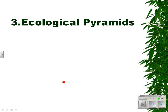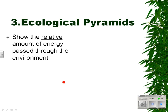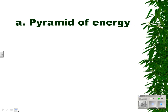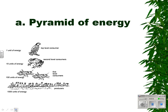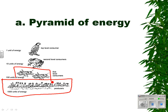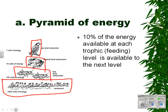The third way we can show the passage of energy is something called an ecological pyramid. Ecological pyramids show the relative amount of energy passed through the environment. There are three types. The first is called a pyramid of energy. In an ecological pyramid or food chain, each one of these levels is called a trophic, or feeding, level — we've seen the word 'troph' before when we talked about heterotrophs and autotrophs. Troph means feeding.